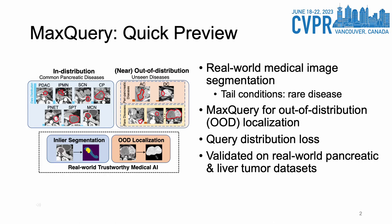Real-world medical image segmentation is a challenging task, particularly for tail conditions associated with rare diseases. We propose MaxQuery for out-of-distribution localization in this task. We adopt object queries in mask transformers to formulate segmentation as a soft cluster assignment. During training, the queries fit the feature-level cluster centers of inliers, allowing the similarity between pixels and queries to localize OOD regions during inference. We propose a query distribution loss to enforce clear boundaries among segmentation targets at the query level, improving both inlier segmentation and OOD indication. Our framework is tested on real-world pancreatic and liver tumor segmentation, outperforming previous state-of-the-art algorithms.